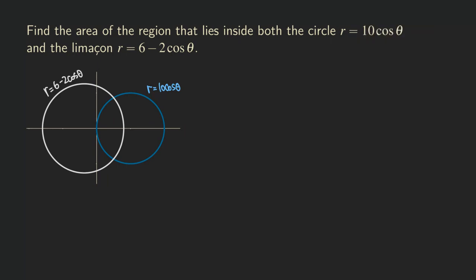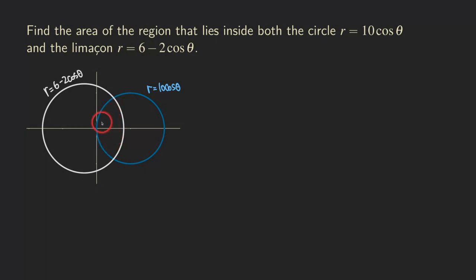What we are going to do is think about how to find the area of the overlapping region. We can see that this region is symmetric, so we can actually just find the area above the x-axis and then double it to get the area for the total region. How do we find the area for just this portion above the x-axis? This is the region we're talking about right here.